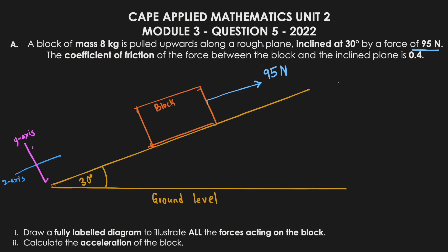We know there is friction for two reasons: they stated it's a rough plane, and they gave us a coefficient of friction of 0.4. Friction always opposes the direction of motion. Since the block is moving up the hill, friction acts down the hill, opposing the upward motion. We don't have a value for friction yet, but we know it's present.